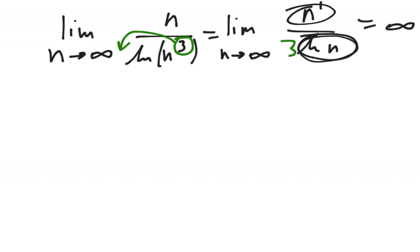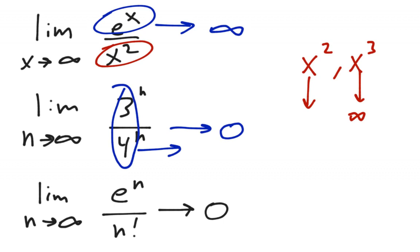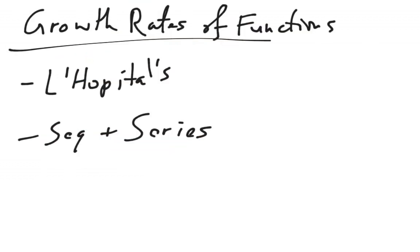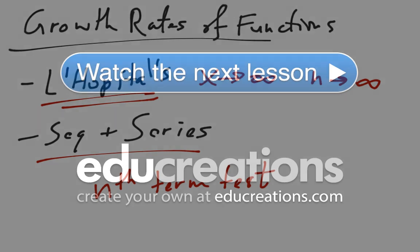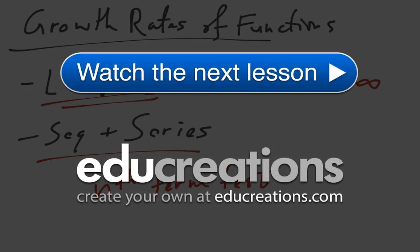Just to clarify, you can only use growth rates of functions when n is approaching infinity. So in all of these examples, n approached infinity. Hence, we can only use it when we're doing L'Hopital's rule as x or n approaches infinity. Or when we have sequences in series and we're doing, for example, the nth term test, or something of that nature where we're trying to compare things as n goes to infinity.